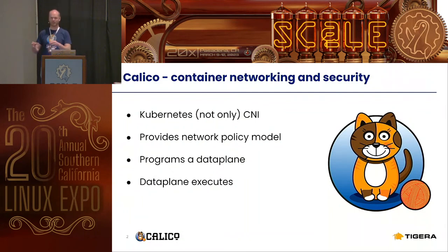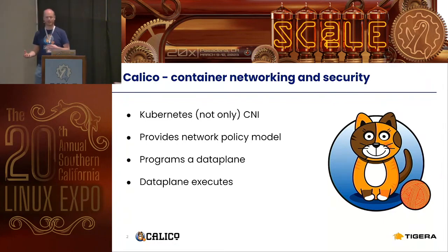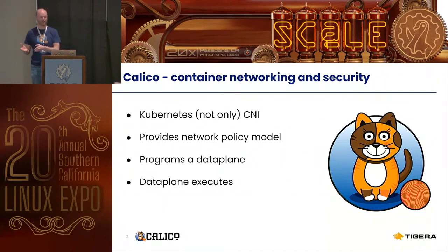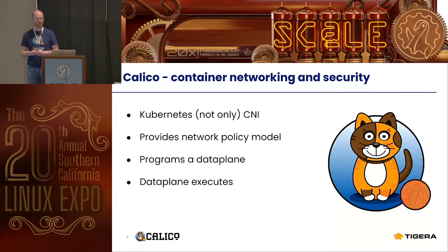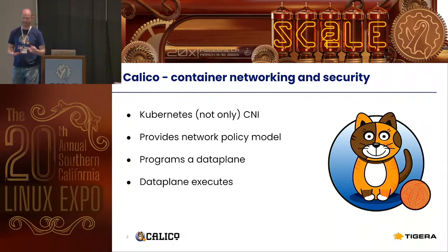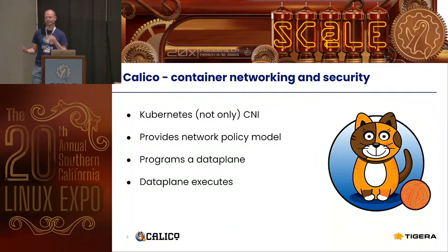But Calico doesn't just provide a networking plugin. More importantly, it provides a network policy model, which is the other plugin you need for Kubernetes. Kubernetes has its own policy model, which is actually younger than Calico's policy model, and you need something that actually powers that policy model. Calico has its own policy model which is a superset of what Kubernetes offers, but also implements everything the Kubernetes model requires. It is essentially a control plane that takes your policies and cluster state and puts them together into a data plane that executes.